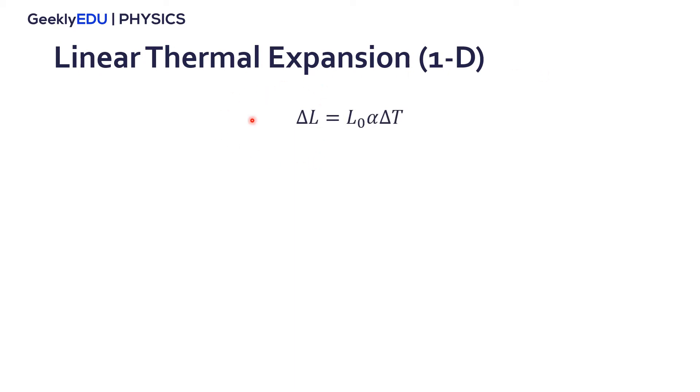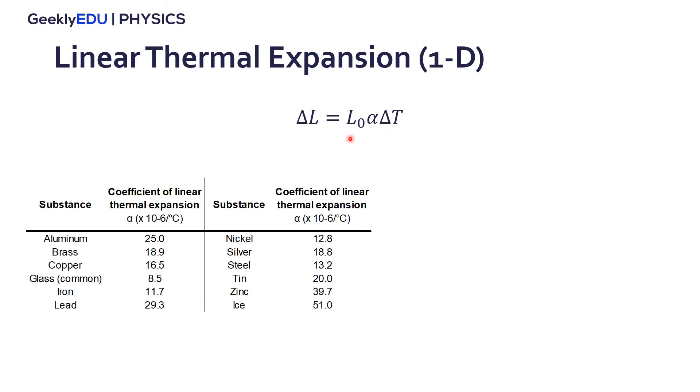We know that the variation in size and length for this example depends on the initial length of the object, depends on which type of object with which material we are dealing and the variation in temperature. This coefficient of linear thermal expansion can be found in several tables. We have a lot of tables that give us this coefficient depending on each material.